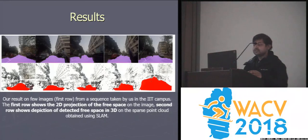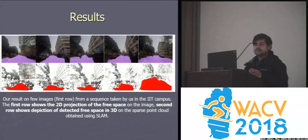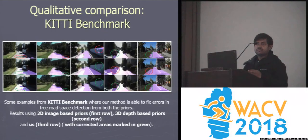First, we show some qualitative results. This is a particular example taken on our university campus. We show the detected road and the free space in 2D in the first row and in 3D in the second row. Now we show some qualitative analysis.